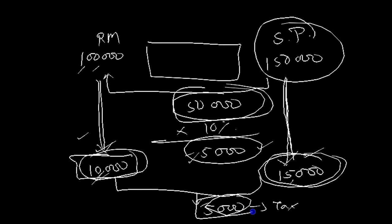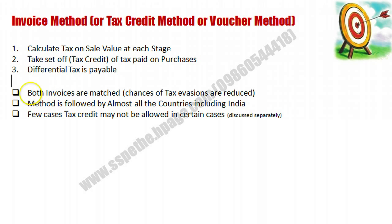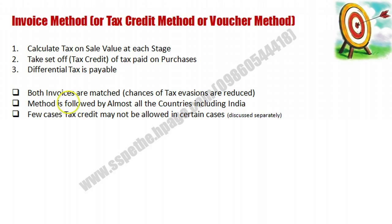The benefit of this method is that both invoices are matched — the sale invoice is checked along with the purchase invoice. Because of this cross-checking, the chances of tax evasion are reduced. That is why this method is followed in almost all countries, including India. In a few cases, tax credit may not be allowed — those specific cases are discussed separately.